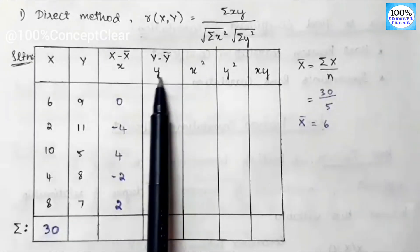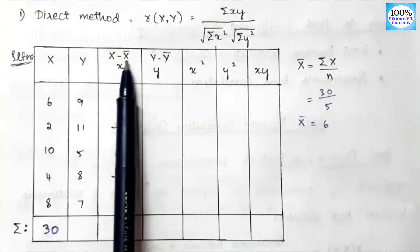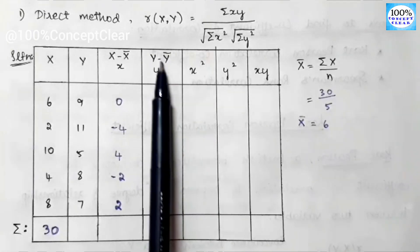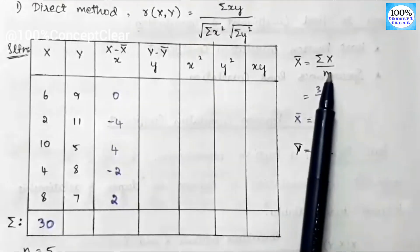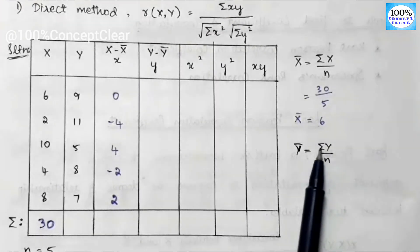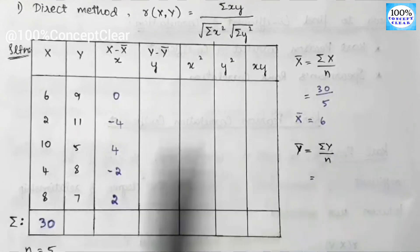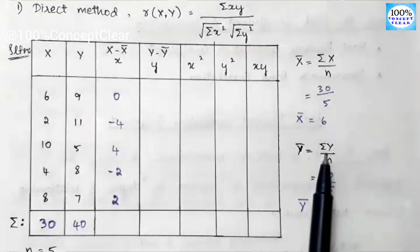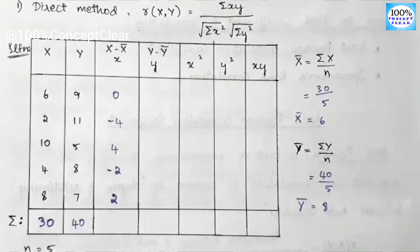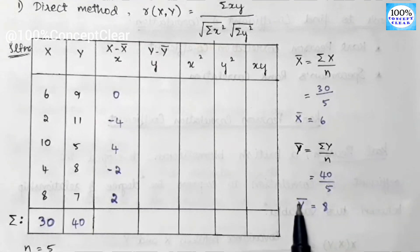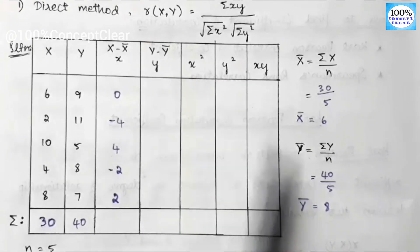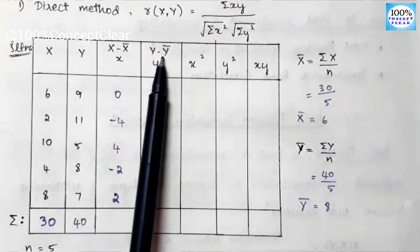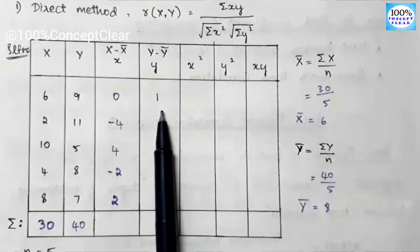Similarly, small y = y − y-bar. y-bar = Σy / n. Adding the Y values gives Σy = 40, so with n = 5, y-bar = 8. For y = 9: 9 − 8 = 1. For y = 5: 5 − 8 = −3. For y = 8: 8 − 8 = 0. For y = 7: 7 − 8 = −1.